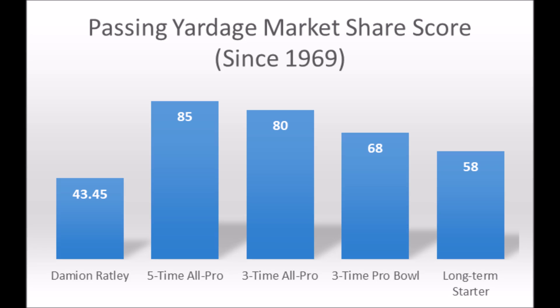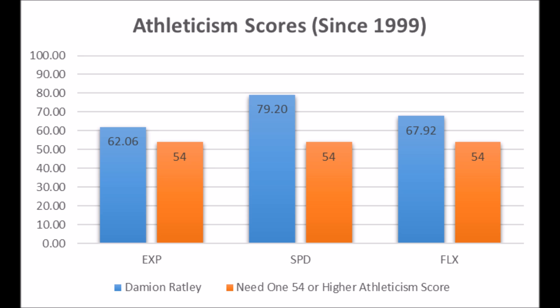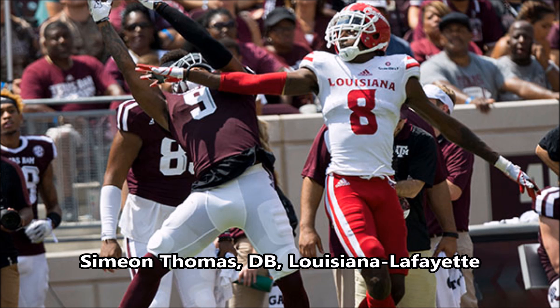Then we get to Damian Ratley, wide receiver out of Texas A&M. His production data shows a 43.45 passing yards market share score, which doesn't hit any meaningful threshold — five-time all-pro, three-time all-pro, three-time Pro Bowl, or even long-term starter. He's really below average across all metrics. His athleticism testing is 62.06 explosive lower body strength, 79.20 speed, and 62.92 flexibility — has all-pro to Pro Bowl potential athletically but not the production to match. Guys like Dorial Green-Beckham Jr. and Justin Hunter are comparable. Ratley is just a guy with great athleticism who didn't do much with it, which rarely translates long-term.